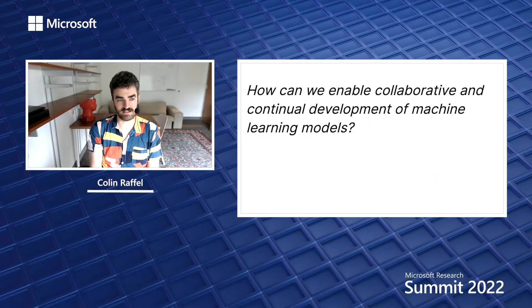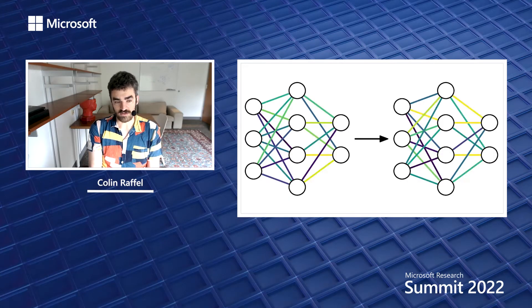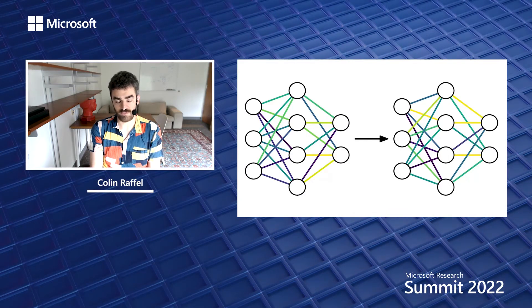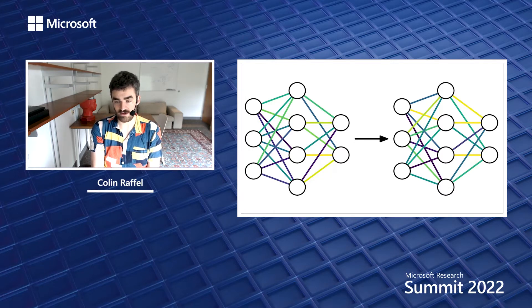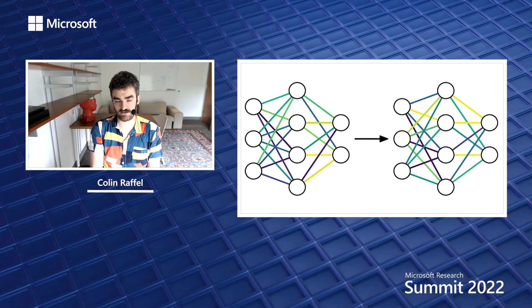The key question is: how can we enable collaborative and continual development of machine learning models? The first thing we need is to make it so that contributors can cheaply communicate patches to a model. The difficulty is that most modern machine learning models are trained with gradient descent, which means that at every iteration of training, every one of the model's parameters is updated. So if a contributor performed one additional step of training, the patch would be as large as communicating the entire model, which would quickly become too expensive and impractical with thousands of contributors.